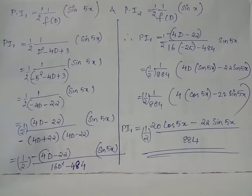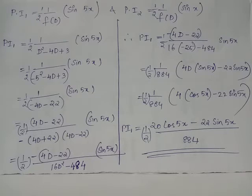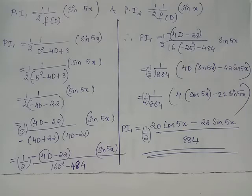Substituting, the denominator becomes -25 - 4D + 3 = -4D - 22, or equivalently -(4D + 22). To rationalize into the format a² - b², we multiply numerator and denominator by (4D - 22). Taking the negative sign to the numerator, PI1 = (1/2)·[-(4D - 22)] / [(4D)² - 22²] acting on sin5x.